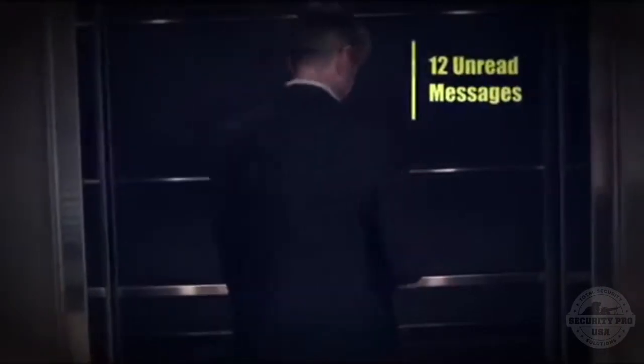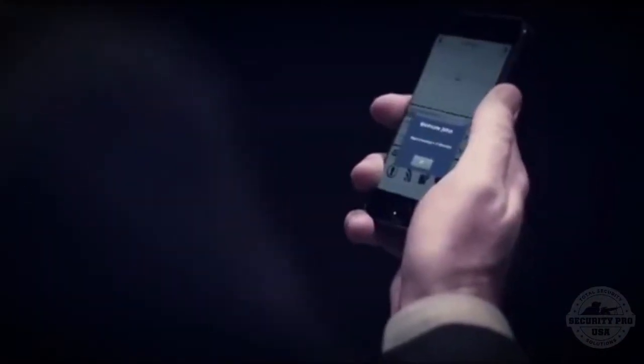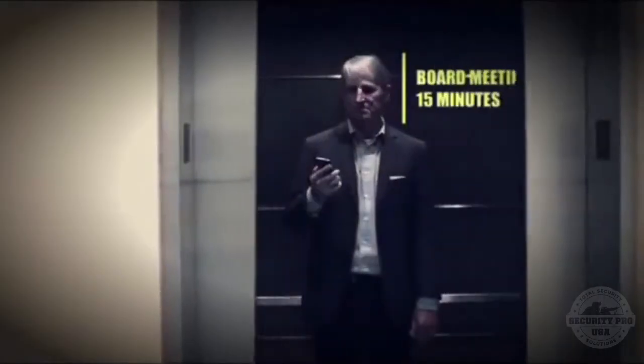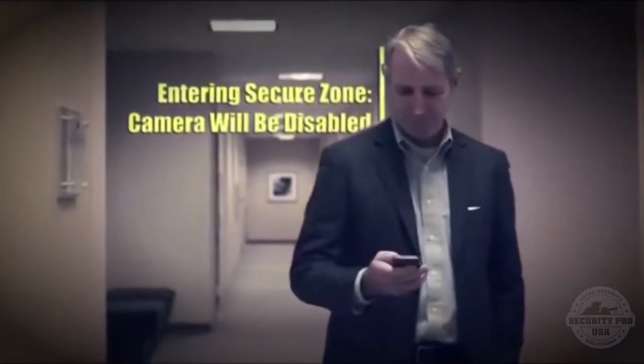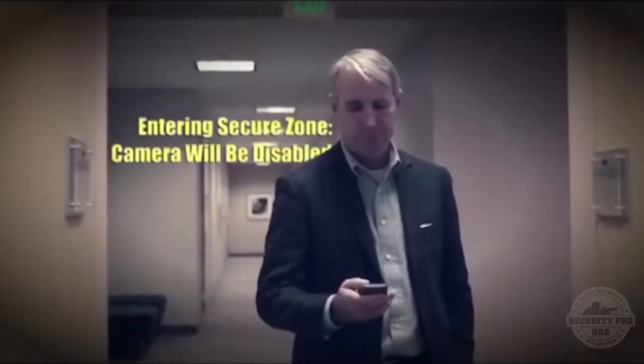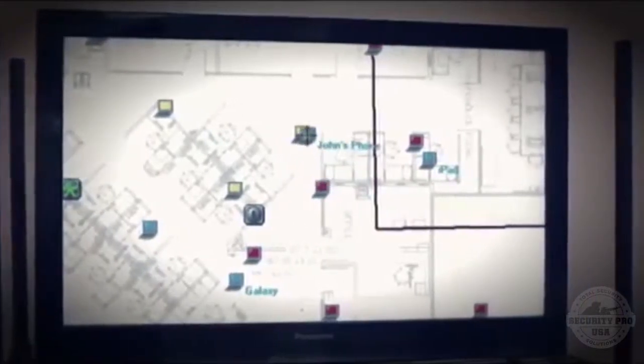What if you could re-establish control of what mobile devices can do based on who and where they are? This is John. John is a vice president headed to a board meeting on the third floor. The third floor is a secured zone designed to keep confidential information from being carried away on mobile devices. When John exits the elevator, the air patrol sensors recognize him and his device and enable his security policy for that zone.